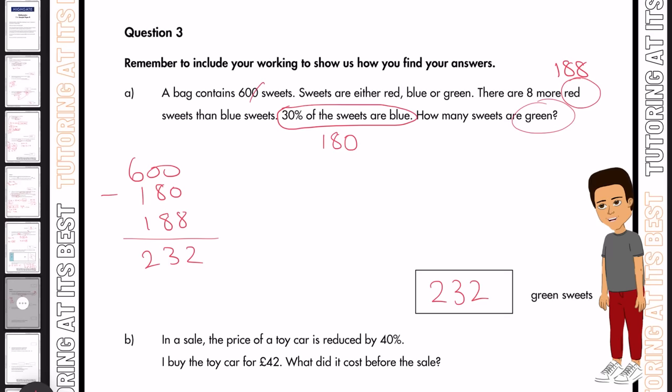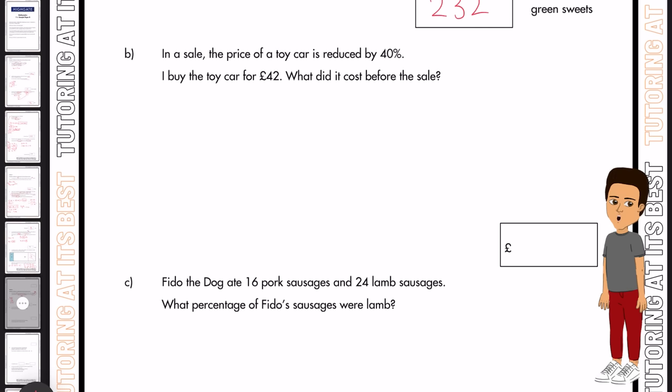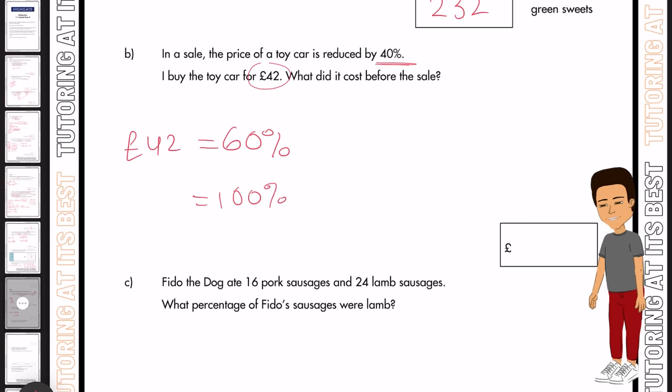In a sale, the price of a toy car is reduced by 40%. I buy the toy car for £42. But what did it cost before the sale? So that means the value must have been higher. So what I'm going to do is calculate £42 as 60% because it's been reduced by 40. And I need to calculate the value before the sale, which is 100% of the value.